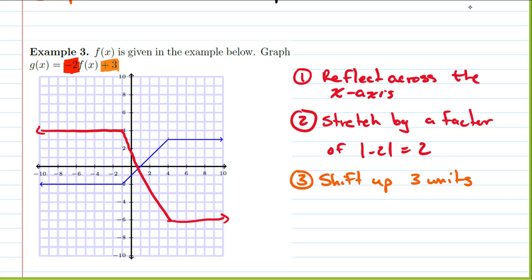Part 2 says we're going to shift this entire graph up 3 units: 1, 2, 3. Shift it up 1, 2, 3. The graph in orange is our final solution of what we would get for the graph of g of x, which is negative 2 times f of x plus 3. So we can graphically do what we were asked to do.